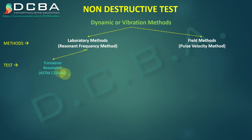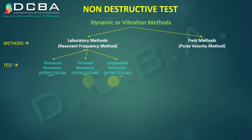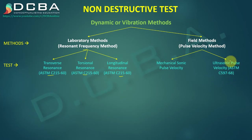The resonant frequency test is conducted by transverse, torsional, or longitudinal resonance, specified under ASTM C215. For the field method, mechanical sonic pulse velocity or ultrasonic pulse velocity is used, specified under ASTM C597. The ultrasonic pulse velocity method is one of the most important and is also referred to as UPV.